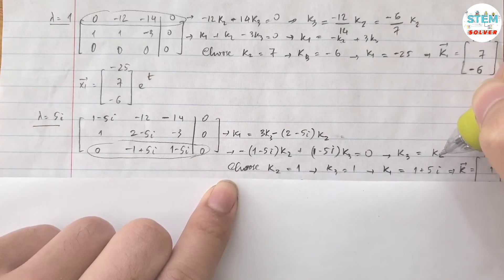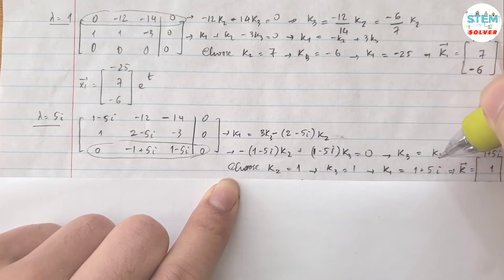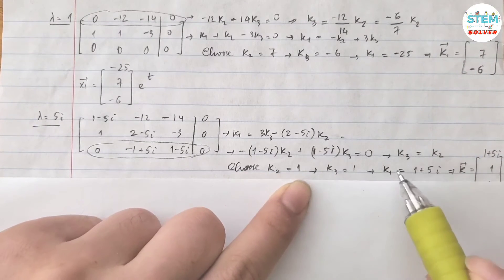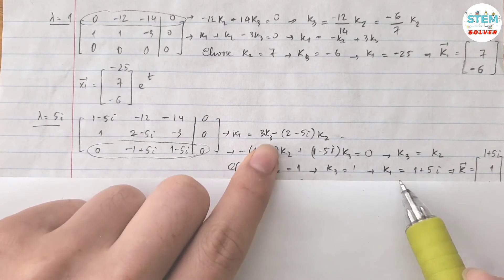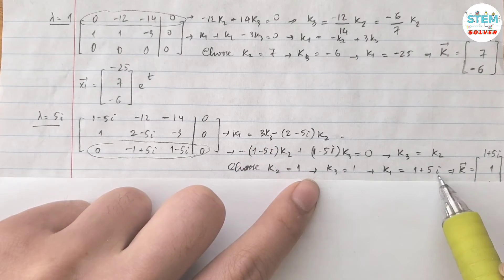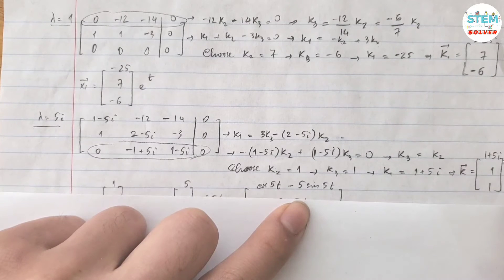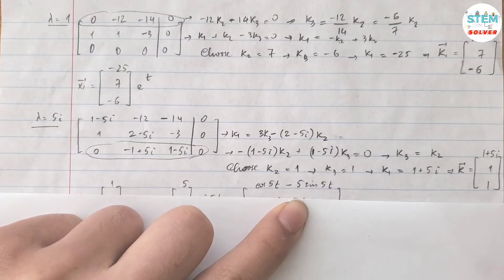I got k2. So they are equal to each other. If I choose k2 one, then k3 is one, k1 is one plus five i. Then my vector k is one plus five i, one, one.